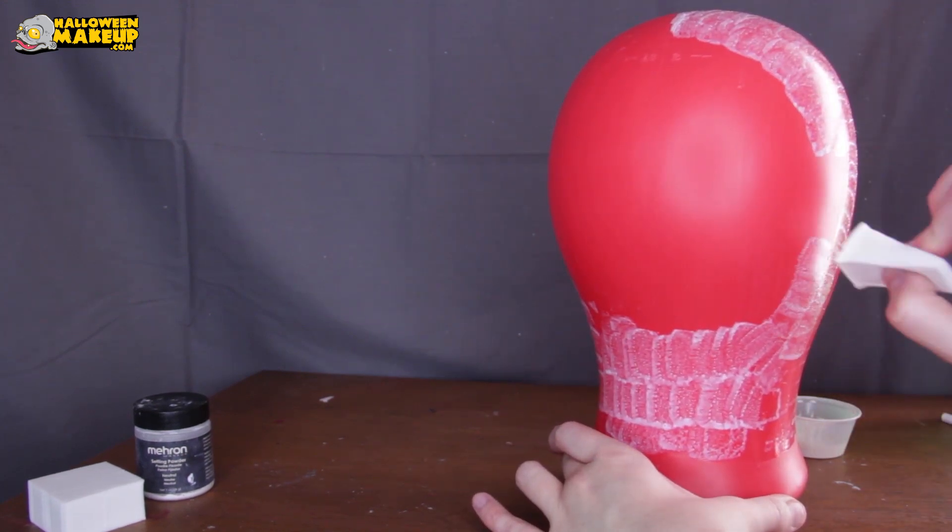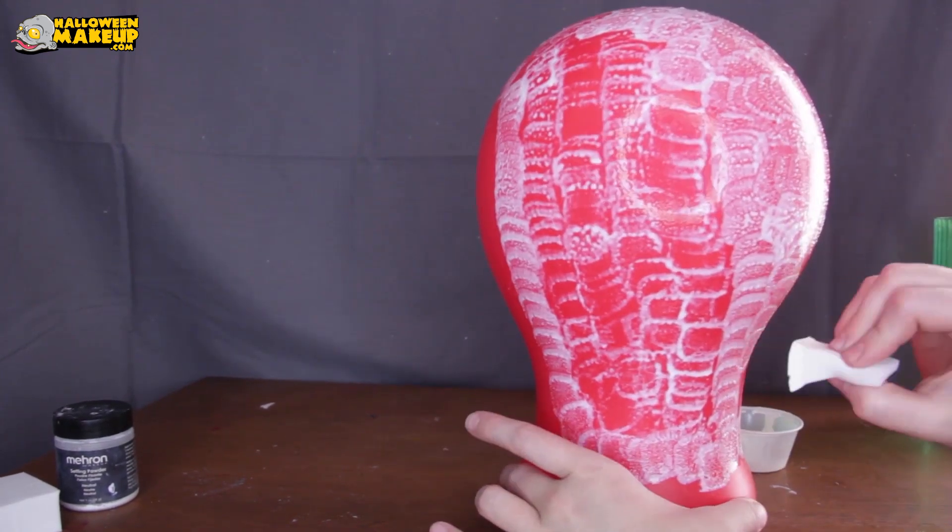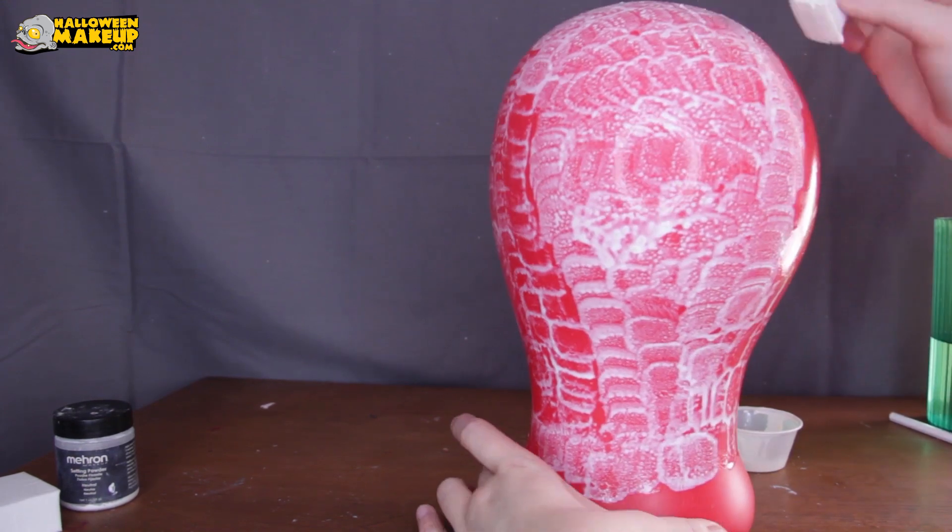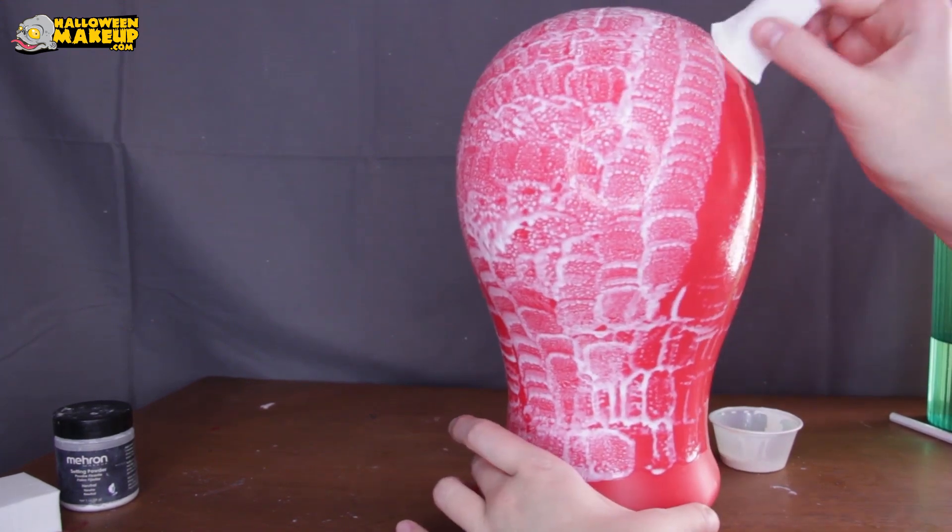If you're concerned about pucker marks or bumps from the makeup sponge, you do have the option of when we remove the bald cap from the form, turning it inside out and using the inside of it which is much more smooth.